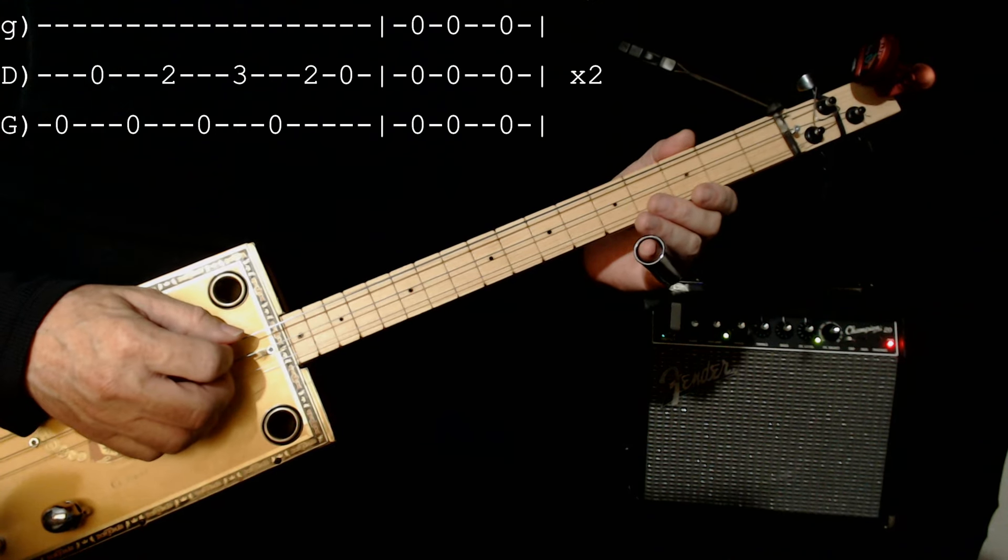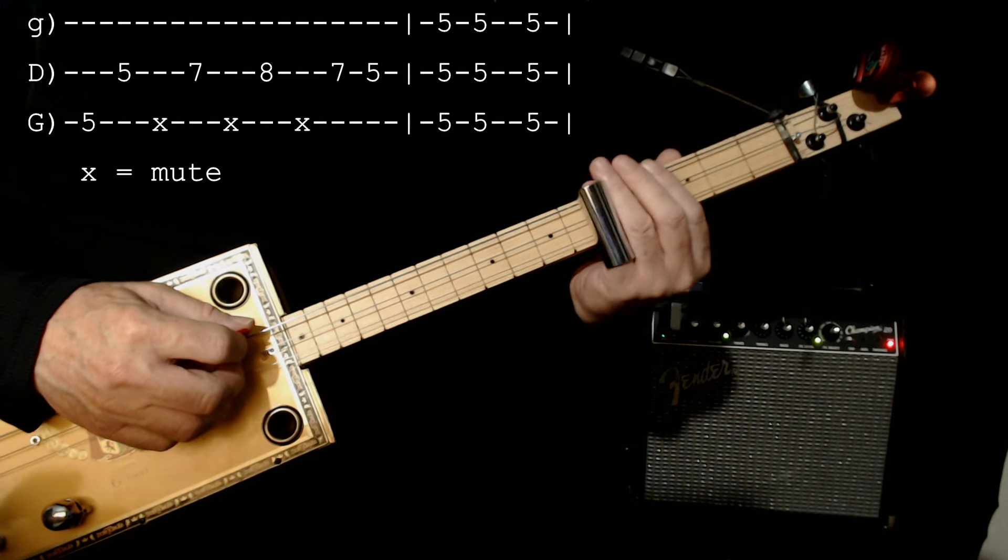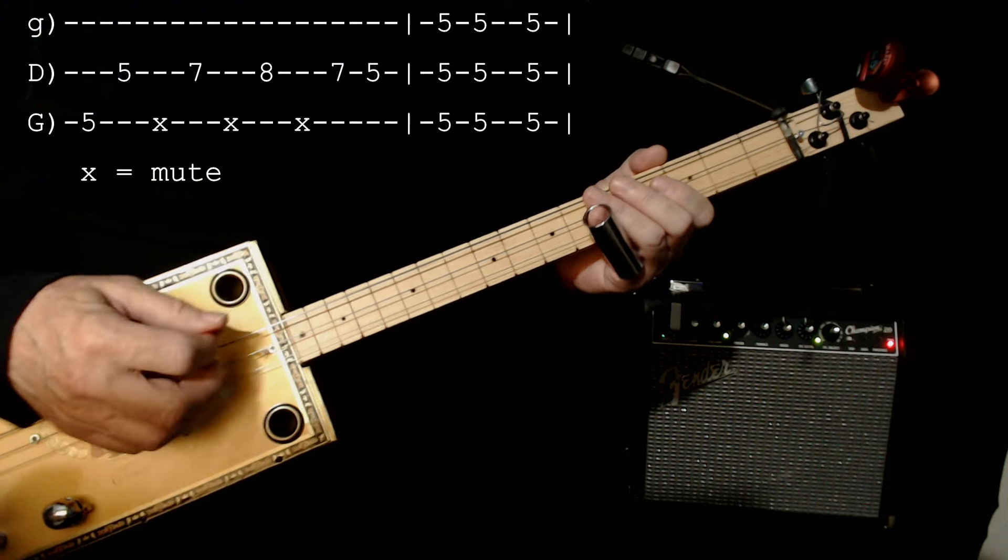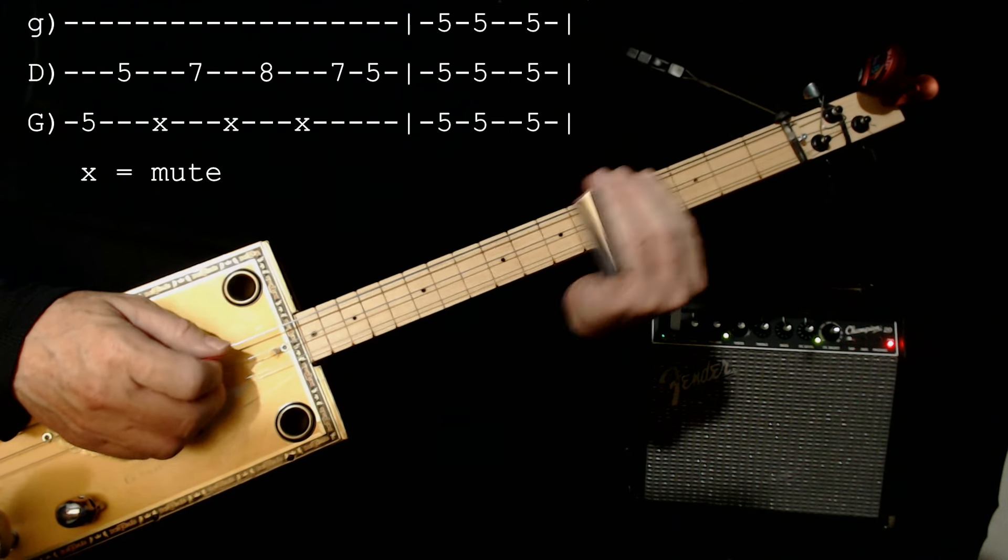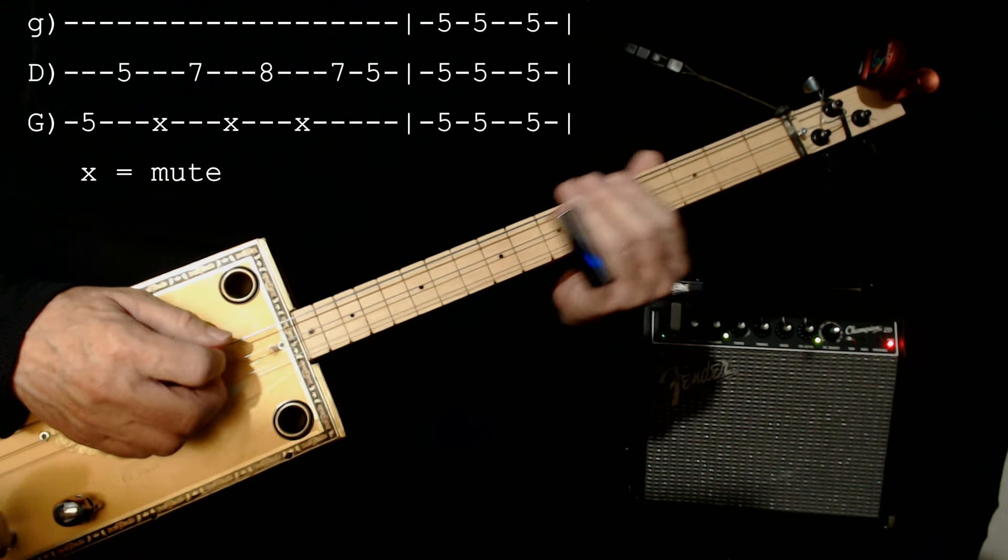Then we go up to the four chord, which is on the fifth fret. In this case, how we're tuned, it'll be a C chord. And we try to play the same lick, which I'll spell out for you: it would be five, five, five, seven, five, eight, five, seven, five on the middle. Let me play it slow.